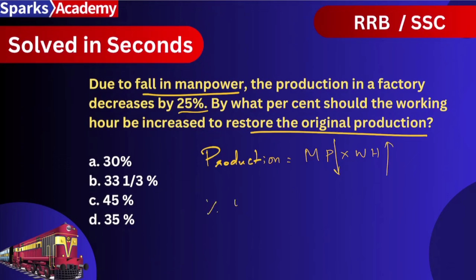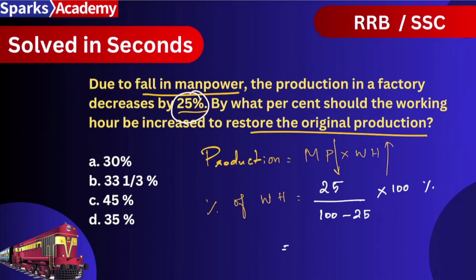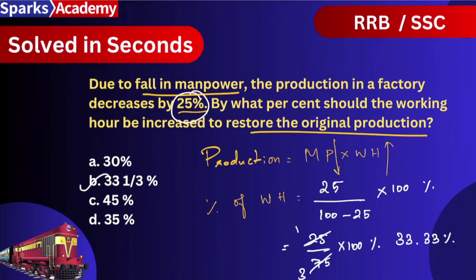The percentage increase in working hours is simple to calculate. The fall in manpower is 25%, so the formula gives us 25 divided by (100 minus 25), into 100. That is 25 divided by 75 into 100, which equals 33.33%. So option B is the correct answer for this question.